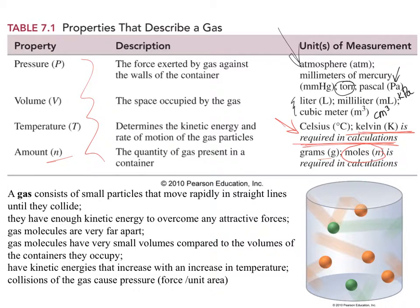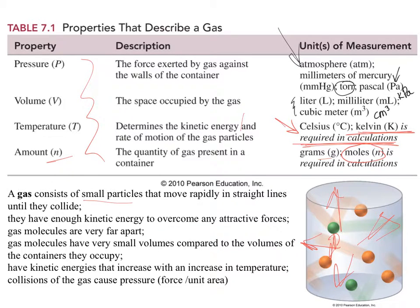Gases — here's my analogy. Imagine you had a room full of three-year-olds that had no adults, no rules, and had just been given lots of sugar and candy. They would be bouncing all over the place, hitting the container, bouncing off each other — sheer chaos. That's my analogy for what a sample of gas would look like under a really powerful microscope. They're small particles that move rapidly in straight lines until they collide. They have enough kinetic energy to overcome any attractive forces like hydrogen bonding. The molecules are very far apart, have very small volumes compared to the container, and kinetic energies increase with increasing temperature, causing collisions that increase pressure.